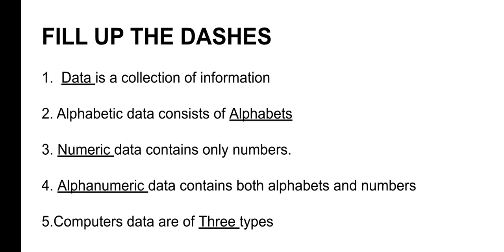Second blank: alphabetic data consists of alphabets. Alphabetic means only A, B, C, D keys are used. If you type using only those keys, it becomes alphabetic data. For example, 'What is your name?' has no numbers, so that is alphabetic data.